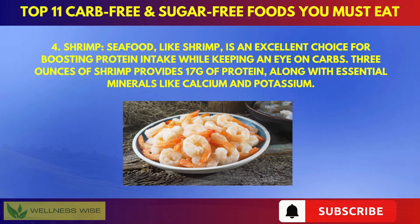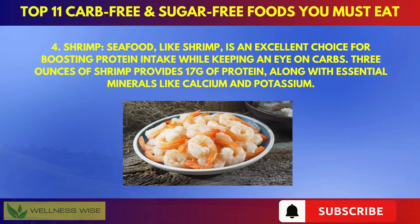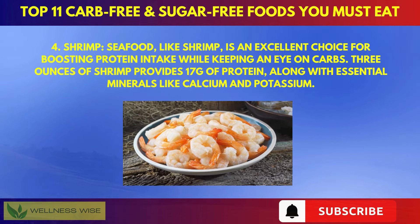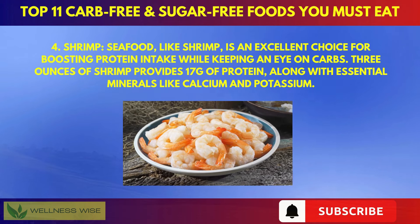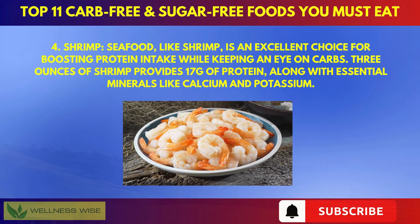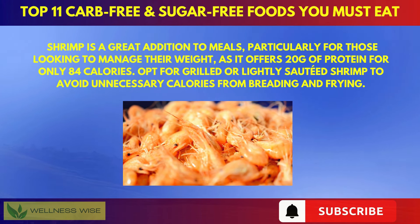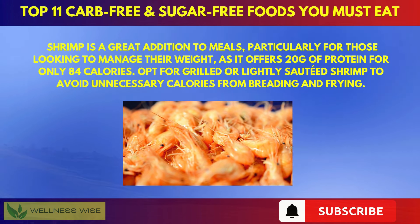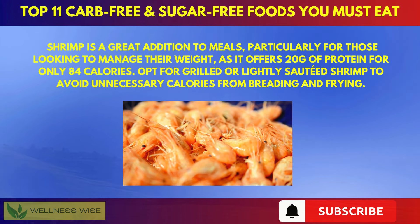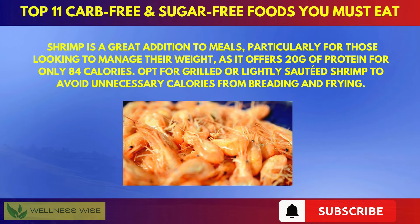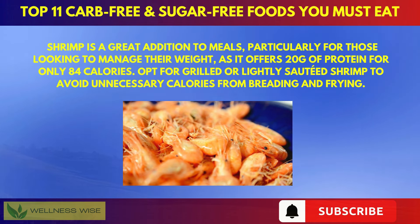Fourth, shrimp. Seafood like shrimp is an excellent choice for boosting protein intake while keeping an eye on carbs. Three ounces of shrimp provide 17g of protein, along with essential minerals like calcium and potassium. Shrimp is a great addition to meals for those looking to manage their weight, offering 20g of protein for only 84 calories. Opt for grilled or lightly sautéed shrimp to avoid unnecessary calories from breading and frying.